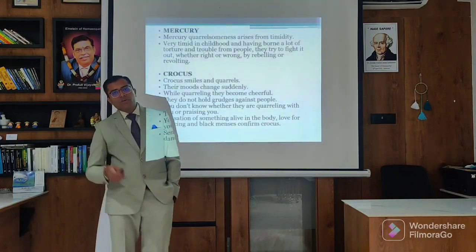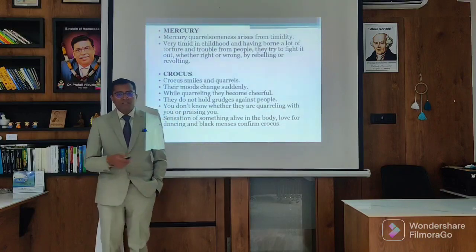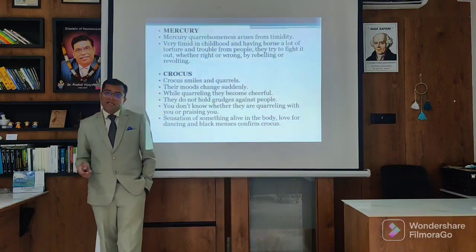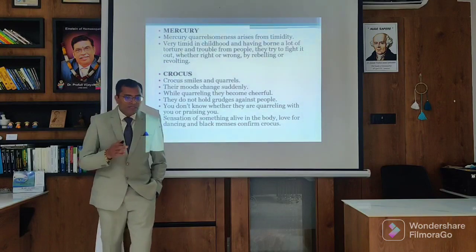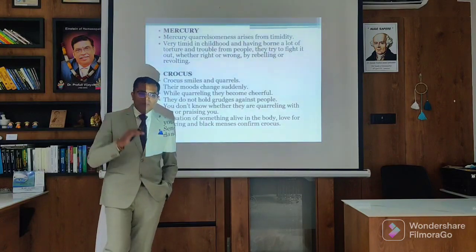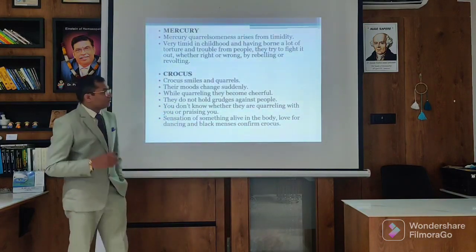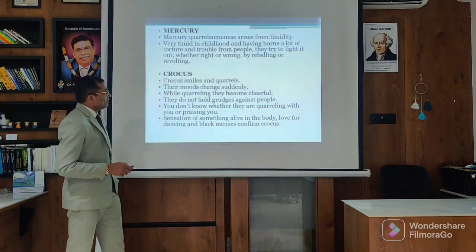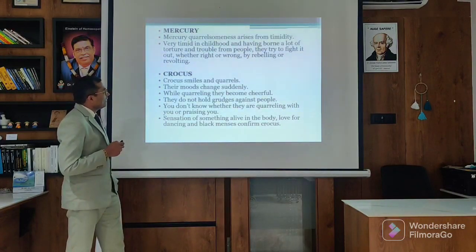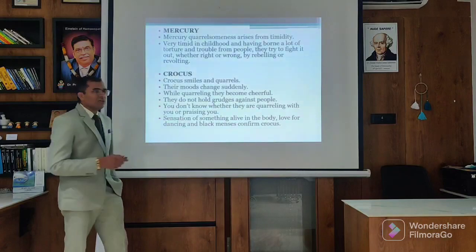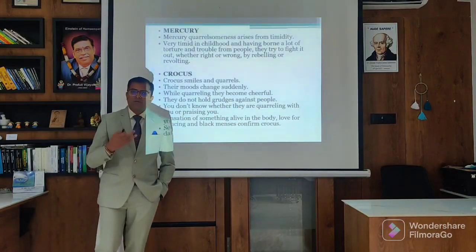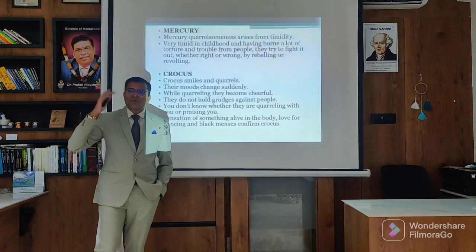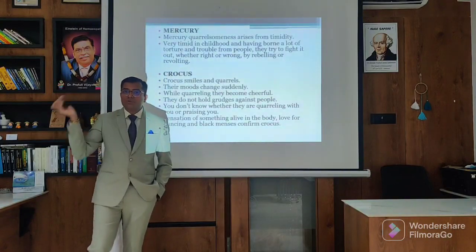Mercury - as usual Mercury is very discontent and dramatic. In Soura it is very timid in childhood, and he is being dominated by others, troubled and tortured by others, and out of that they try to fight it out, whether right or wrong, by rebelling or revolting. These are the rebellious kind of personality, because so much strong domination can lead to change in rebelling.